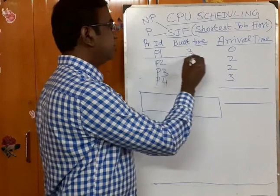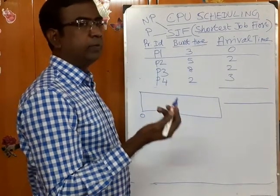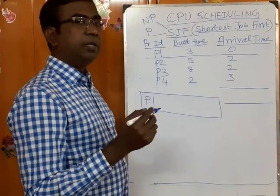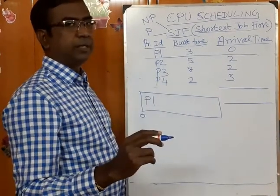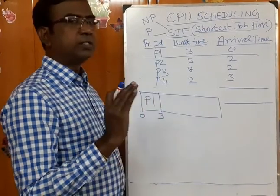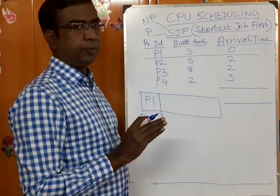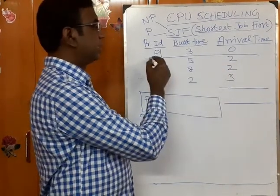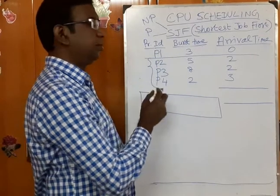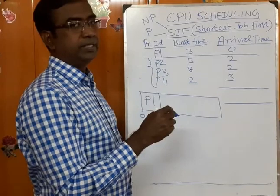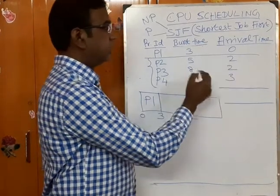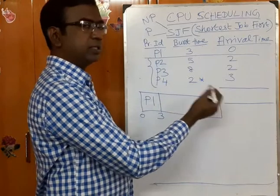At time 0, there is only one job in the ready queue, so P1 will go automatically into the CPU. In non-preemptive SJF, P1 will definitely complete its work — its burst time is 3 seconds, so no other process will interrupt P1 until 3 seconds. After 3 seconds, three processes are there: P2, P3, and P4. Among these three, P4 is the smallest job.